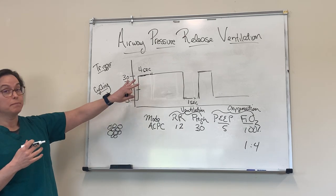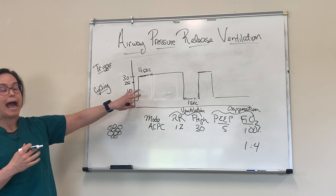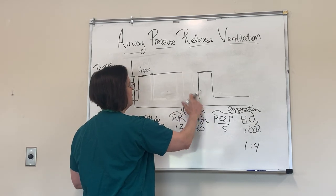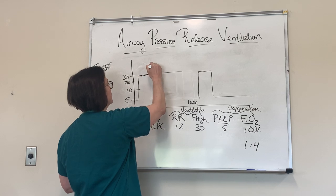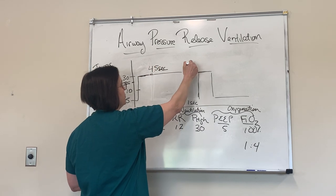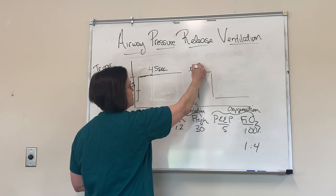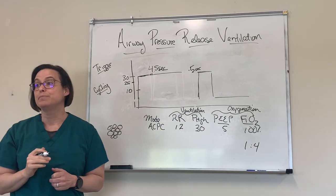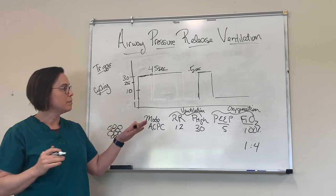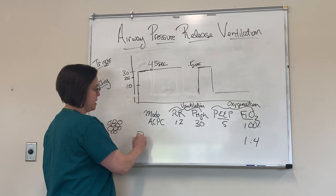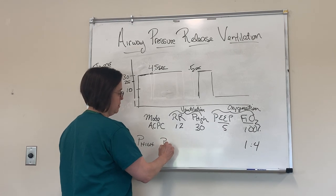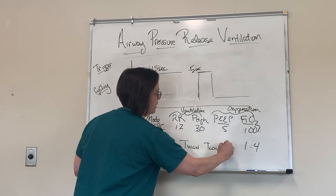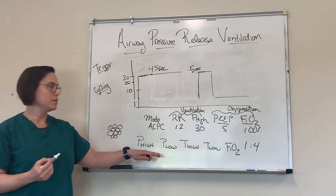So this is technically bi-level, but if we go to the absolute extreme of this continuum, then we shift into APRV. So I'm going to do this for 4.5 seconds and this for 0.5 seconds. And instead of having a PEEP of five, I'm going to have a PEEP actually of zero. When we think about the settings for APRV, we think about a P high, a P low, a T high, a T low, and an FiO2.